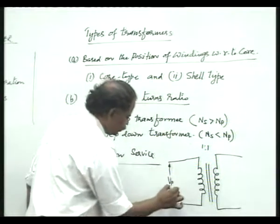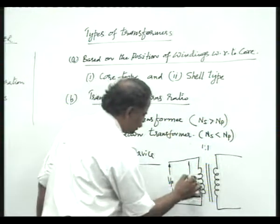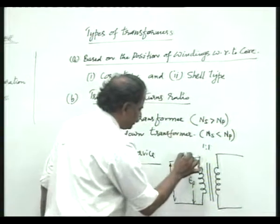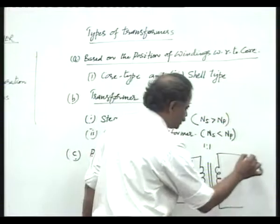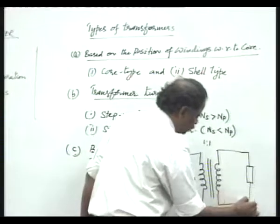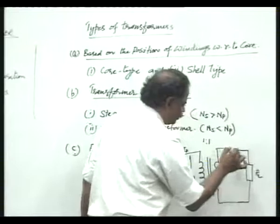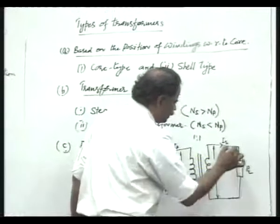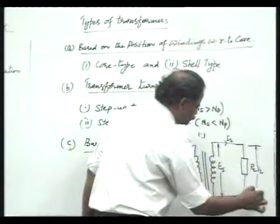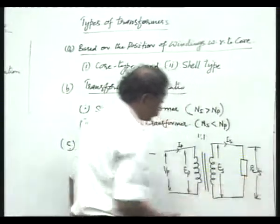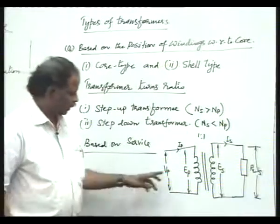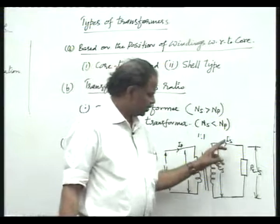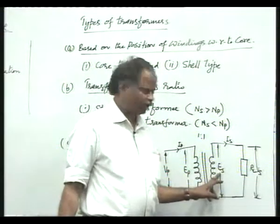This is the representation of the core, this is the primary winding, and this is the secondary winding. The primary winding is applied with a primary voltage, which sets up a self-induced EMF on the primary side — that is Ep — and there will be a primary current Ip. Similarly, on the secondary side, if connected to a load RL, there will be secondary current IS and induced EMF ES, and there will be voltage set up across this load, which is Vs.